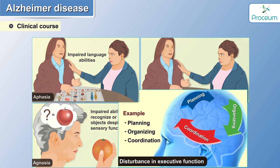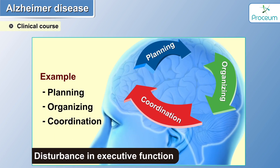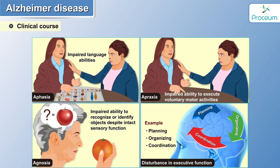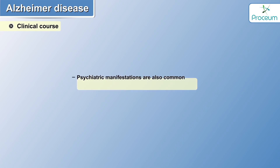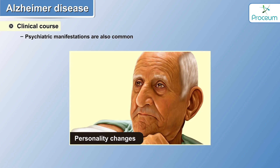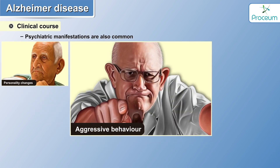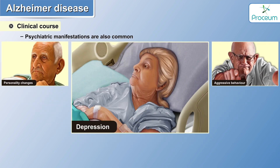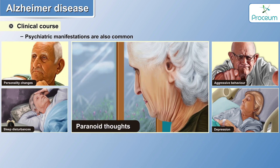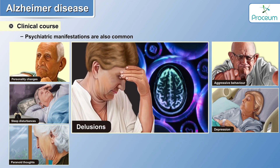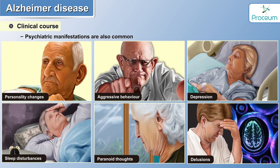There can also be disturbance in executive functioning like planning and organizing. Psychiatric manifestations are also commonly noticed in these patients, with personality changes, aggressive behavior, depression, sleep disturbances, paranoid thoughts, and delusions, which can be bothersome.